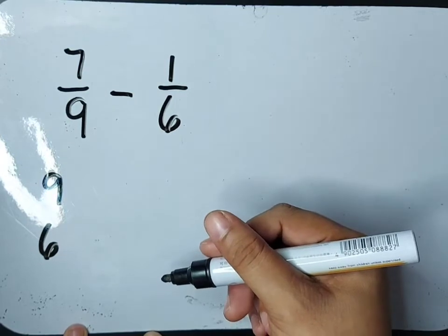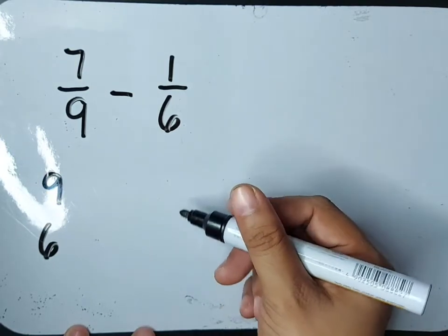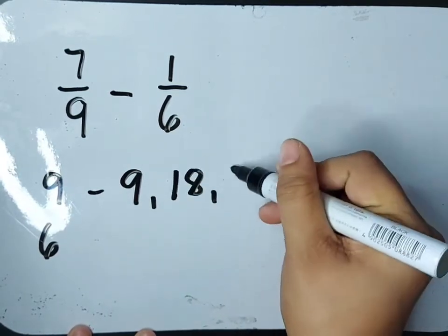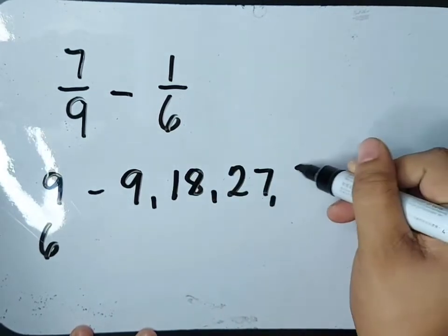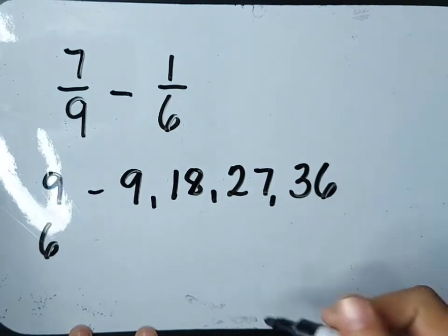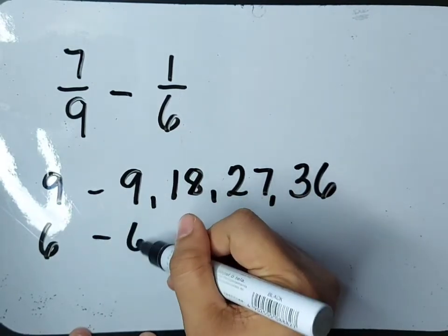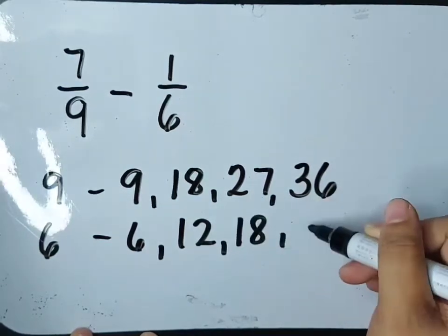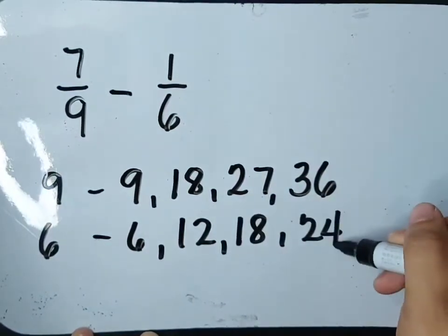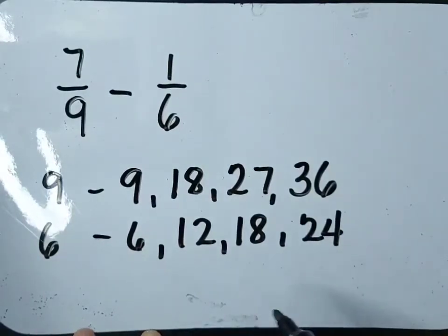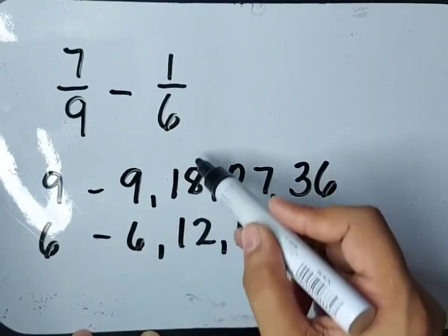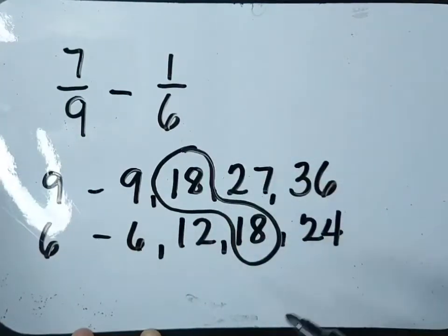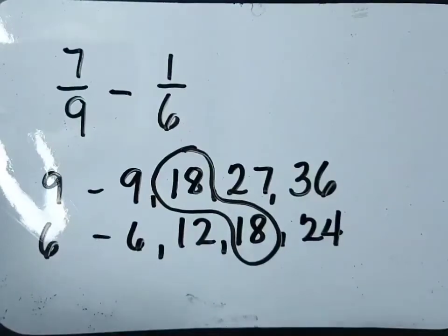Let's find the LCD of 9 and 6 using the listing method. Skip counting by 9: 9, 18, 27, 36. How about 6? Let's keep counting by 6: 6, 12, 18, and 24. In order to find the LCM, we just find the number they have in common. We have 18. So 18 is our LCM.